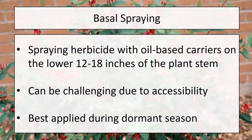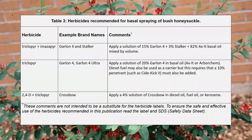Basal spraying involves spraying herbicide with an oil-based carrier to the lower 12 to 18 inches of the plant stem. This can be effective but challenging due to accessibility — you'll need to thin dense areas first. It's best applied during the dormant season. Ohio State recommends a combination of triclopyr and imazapyr (Garlon 4 and Stalker brands), triclopyr by itself, or 2,4-D plus triclopyr — all in an oil-based carrier.